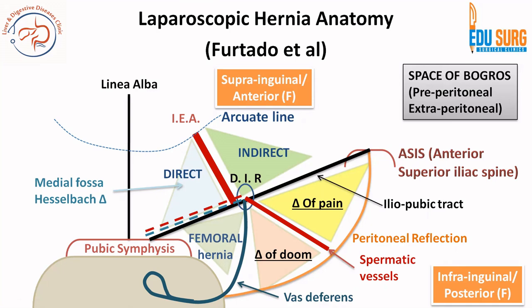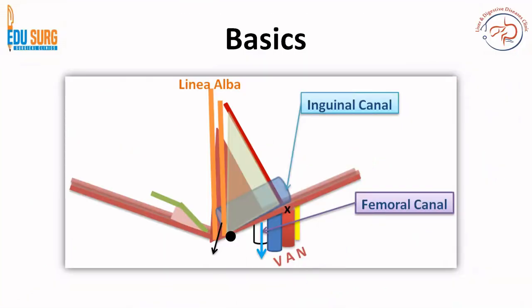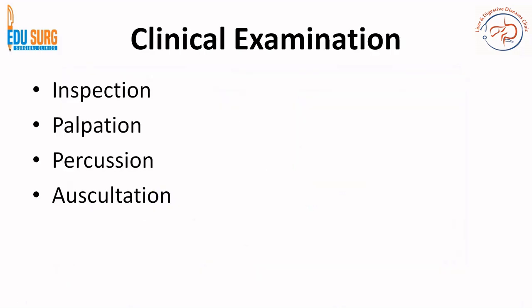Below and lateral to the pubic tubercle is femoral hernia, whereas inguinal hernia is above the inguinal ligament. As you can see here, the femoral canal is below the inguinal ligament, and that is why the femoral hernia will be below, whereas the inguinal hernia coming out through the superficial ring will be medial to the pubic tubercle. The black dot is the pubic tubercle. Please revise these concepts.